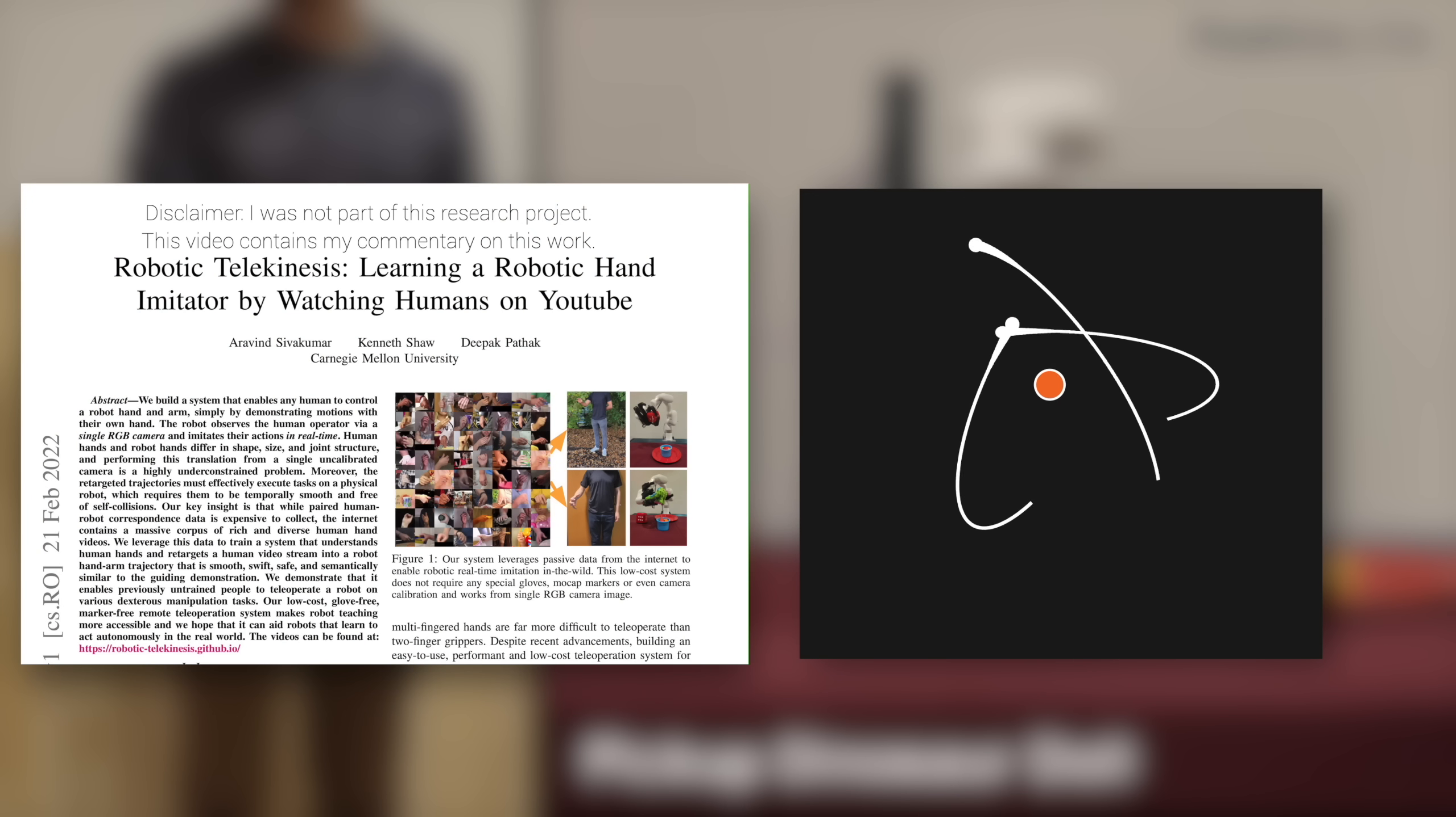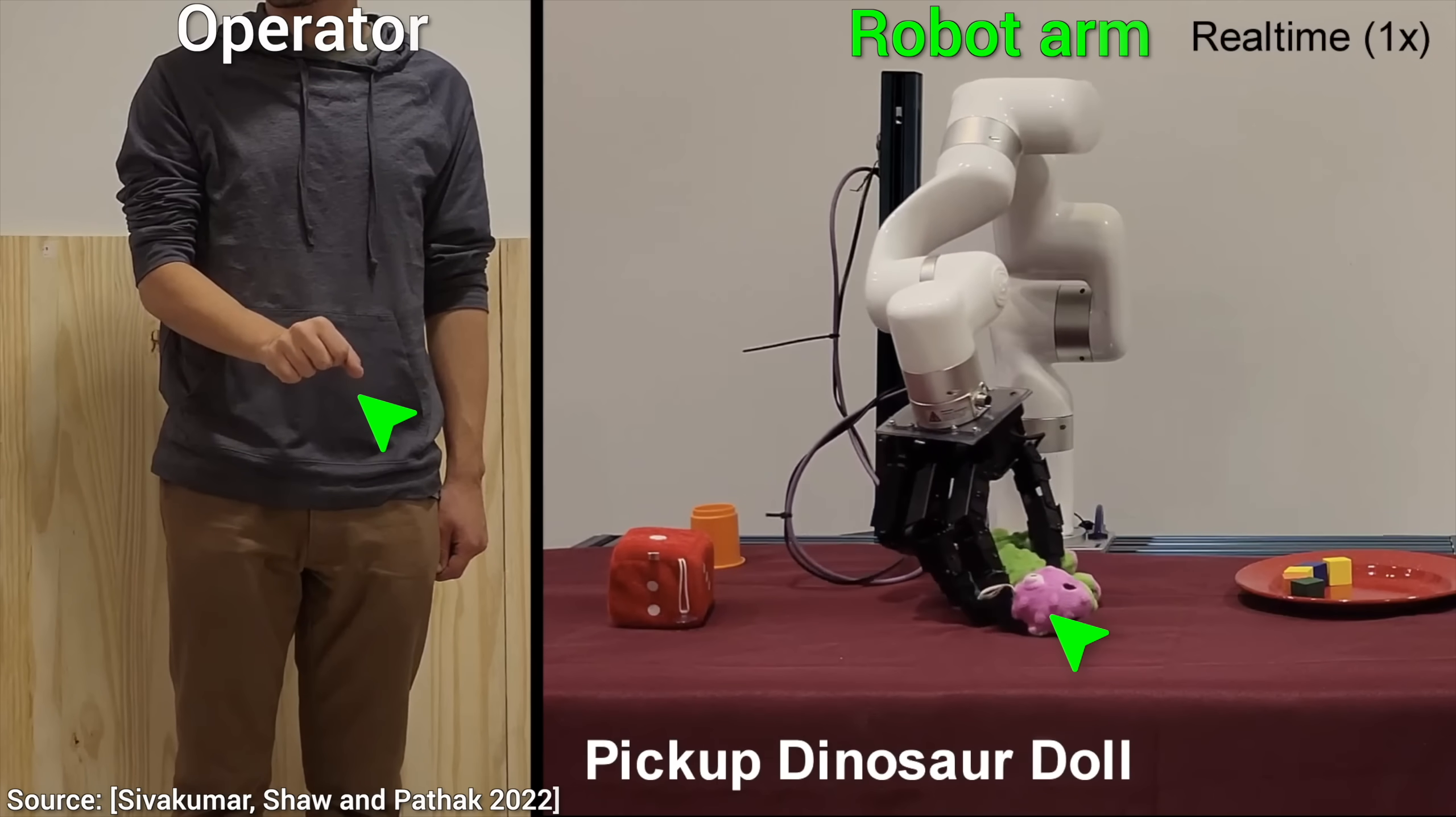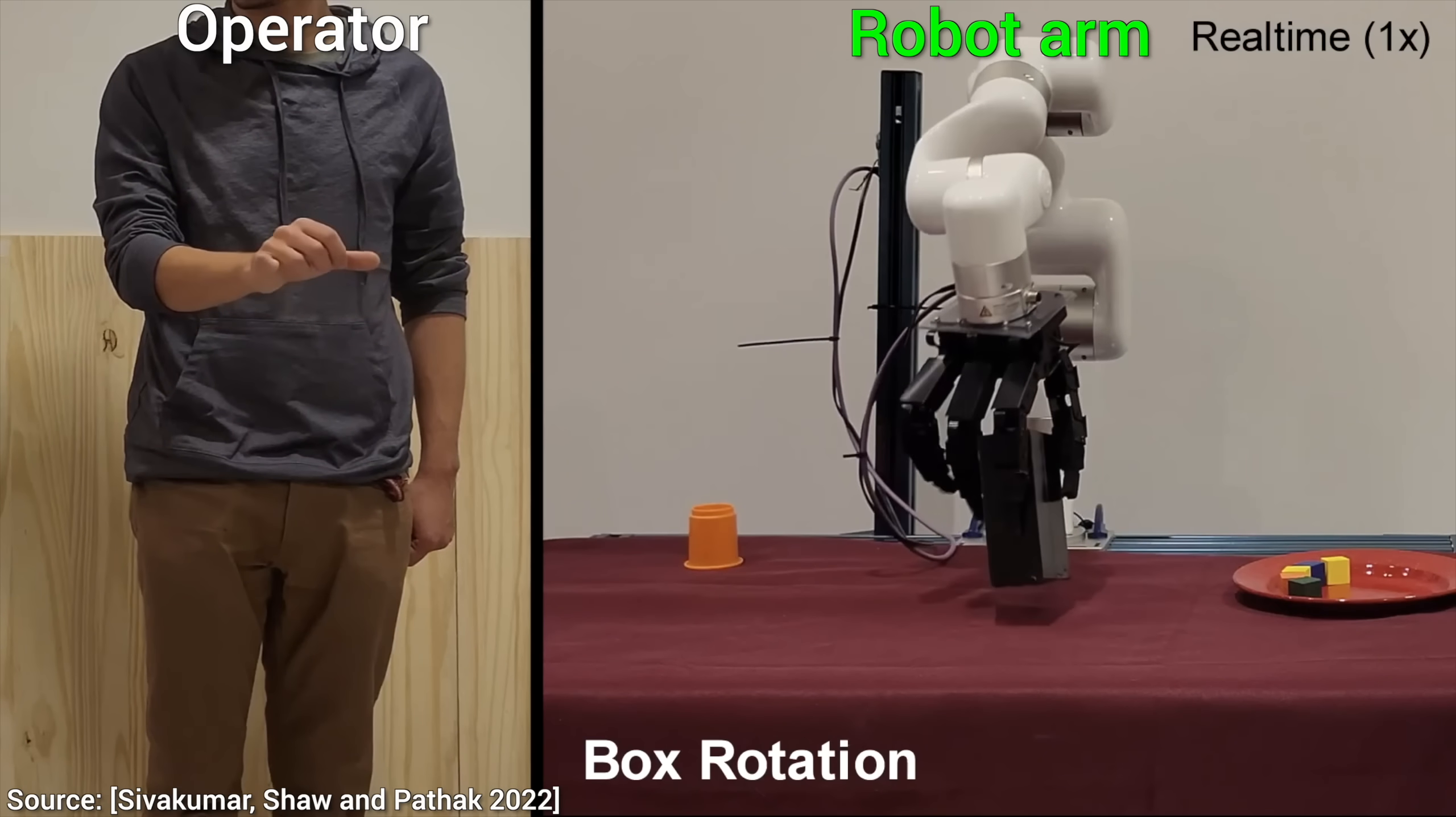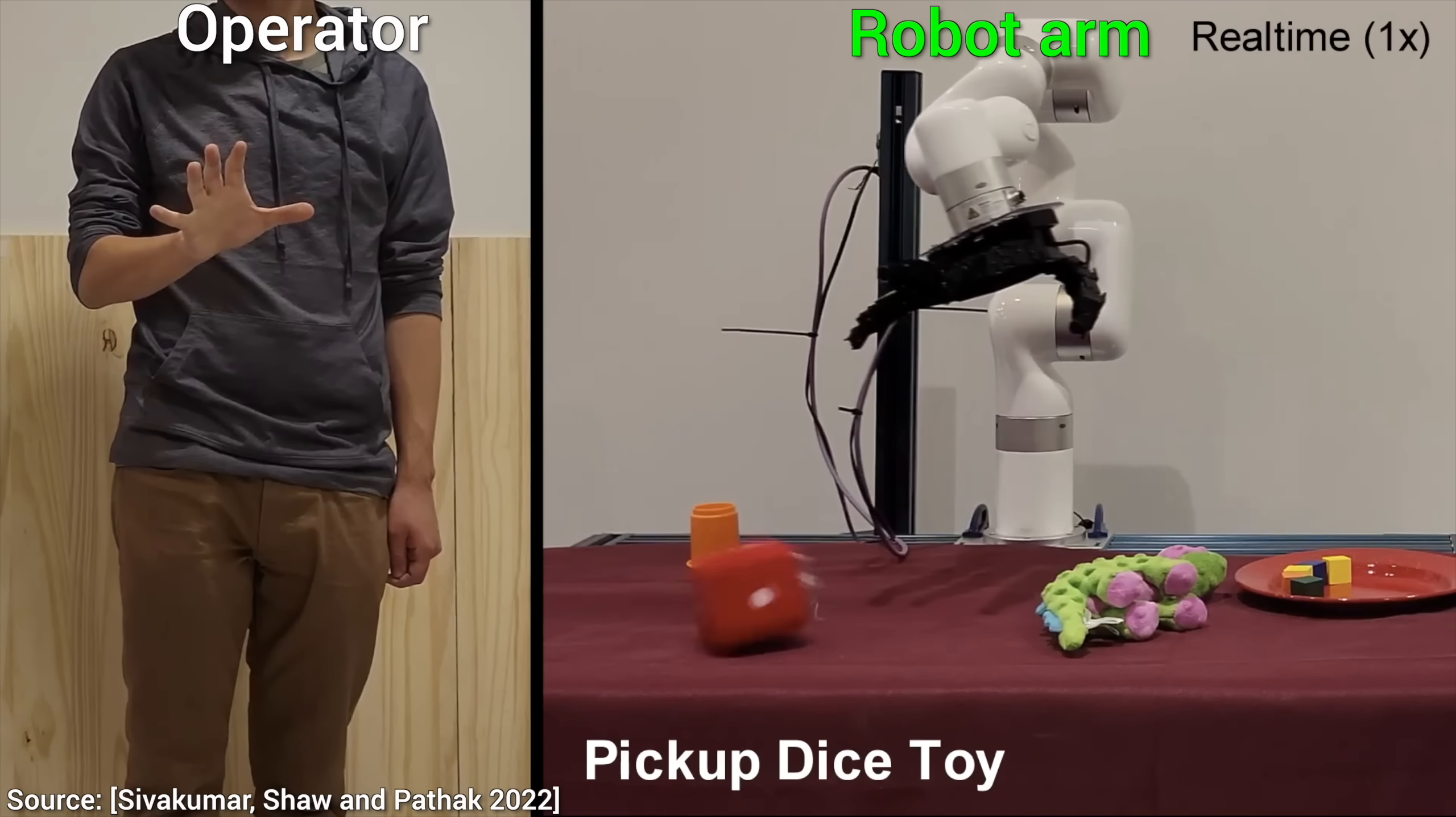Dear Fellow Scholars, this is Two Minute Papers with Dr. Károly Zsolnai-Fehér. Today, we are going to perform something that seems like a true miracle. Oh yes, you are seeing it correctly. This is robotic telekinesis - moving objects from afar. So, what is going on here?